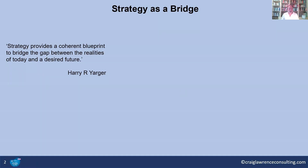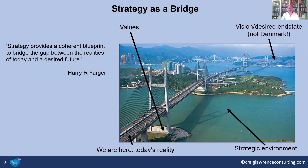In the previous episodes, we identified that this definition by Harry Yarger was a good working definition of strategy — that strategy provides a coherent blueprint to bridge the gap between the realities of today and a desired future. We also developed this idea of bridging further, representing our strategy as a bridge, where we are bottom left, with our strategy taking us through the strategic environment over three to five years to achieve our vision or desired end state, built on a bedrock of values.